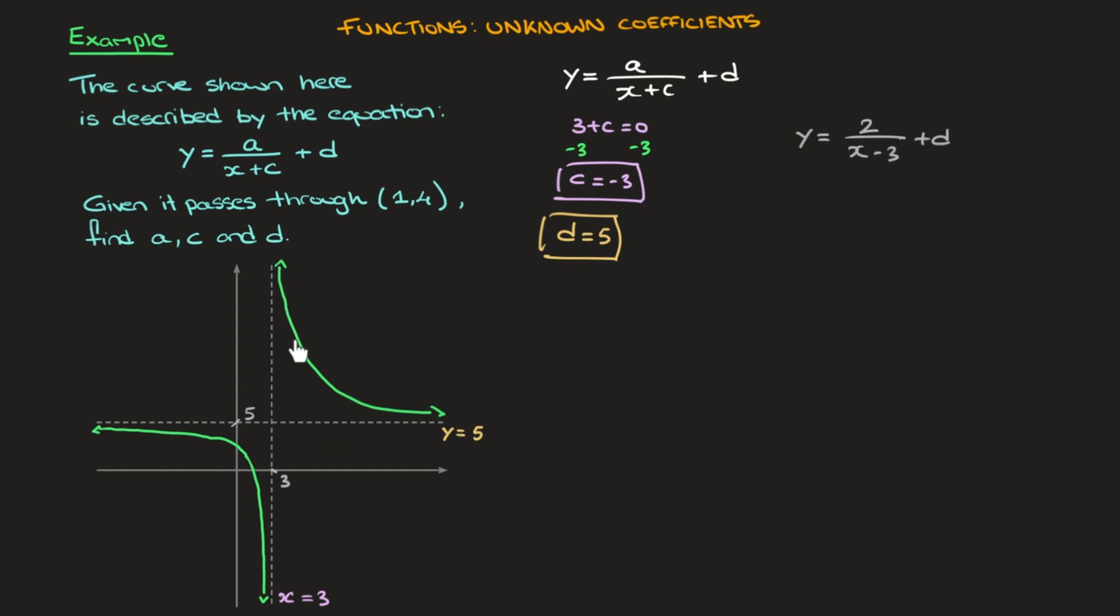And this curve gets closer and closer to that line y equals 5 as x gets bigger and bigger. And that's both on the right hand side as well as on the left hand side. And put simply, the bigger x gets, the closer this curve gets to y equals 5.